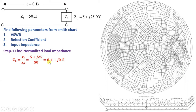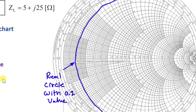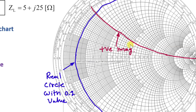For our normalized ZL, the real component is 0.1 and the imaginary component is plus J0.5. The real component is associated with the real circle at 0.1. For plus J0.5, we look at the upper circles. The value 0.5 lies in between the imaginary circle values 0.4 and 0.6, so the intersection point represents our load: real 0.1 and imaginary 0.5.